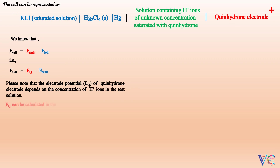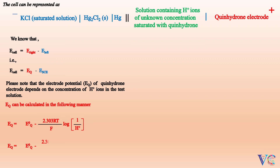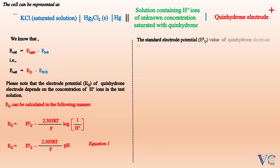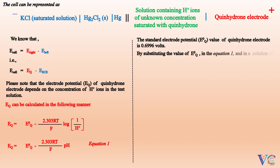E_Q can be calculated as: E_Q = E°_Q − (2.303RT/F)·log(1/[H⁺]), that is, E_Q = E°_Q − 0.0591·pH (Equation 1). The standard electrode potential E°_Q of the quinhydrone electrode is 0.6996 volts. By substituting E°_Q into Equation 1, E_Q = 0.6996 − 0.0591·pH.